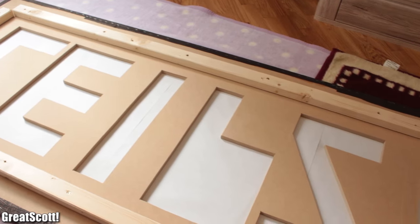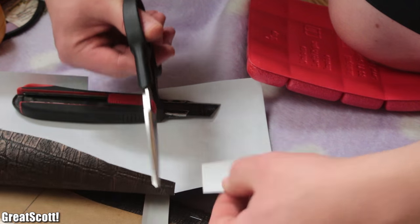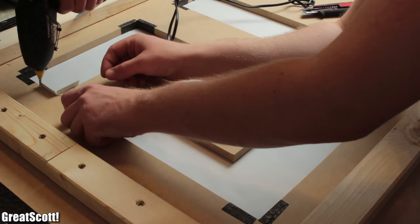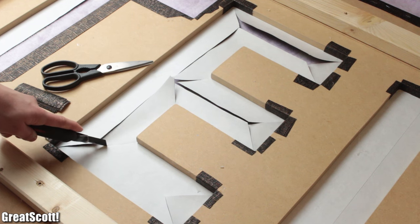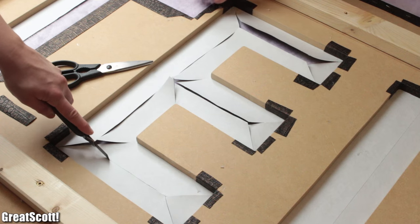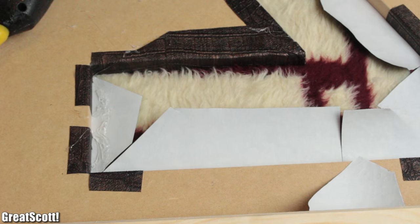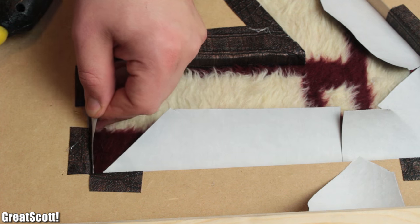One day later the glue was dry and we continued by gluing small wallpaper strips into the edges of the letters. This way when we cut the wallpaper in this artistic way and glue the overhangs to the back side, the complete surface of the letters inside will be covered in wallpaper.